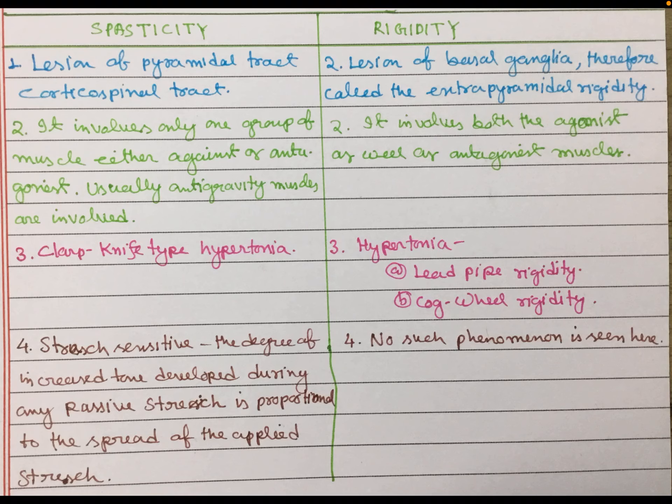Difference between spasticity and rigidity. Spasticity is a sign of a lesion of the pyramidal tract, and rigidity is a sign of extrapyramidal tract or basal ganglia involvement.